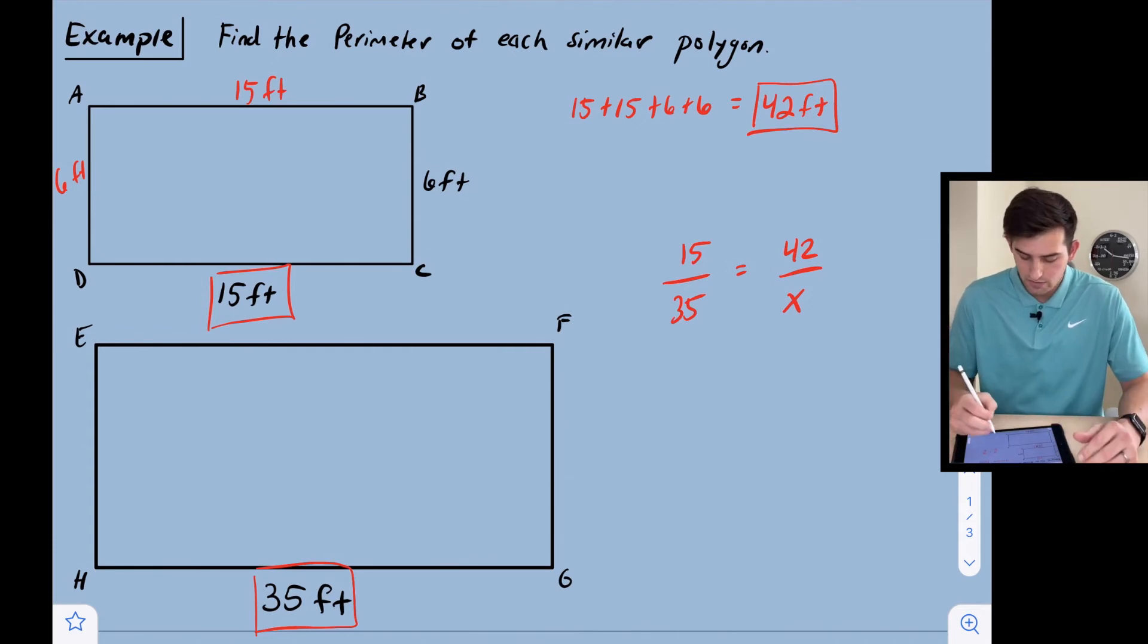We can say 15 over 35 equals 42 over x, because x would represent the perimeter of our larger rectangle.